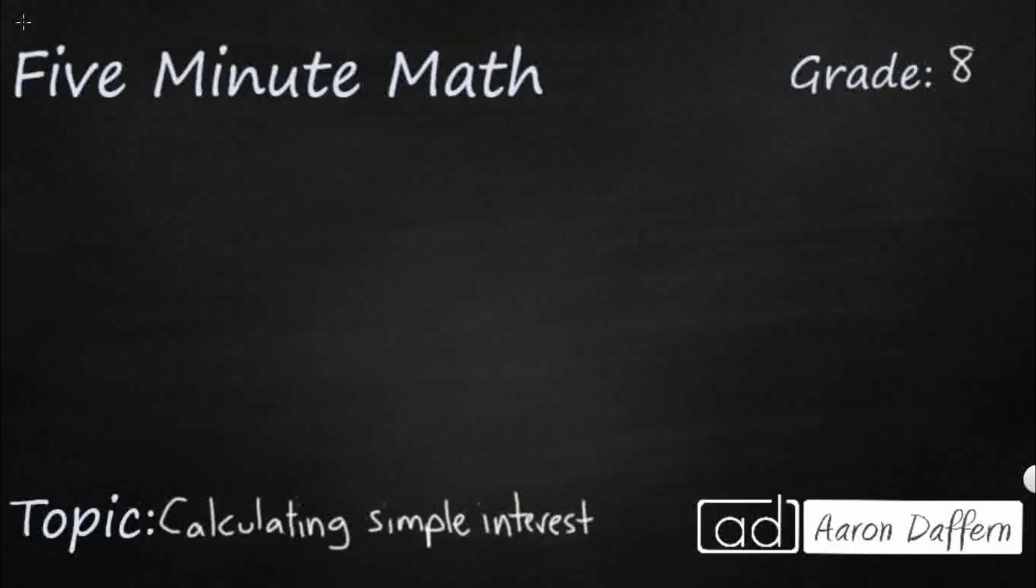So our formula for simple interest is I equals PRT. We're just going to multiply those three things. The I is our interest, that's usually what we're looking for. It needs to say specifically it's simple, not compound. The P equals the principal, that's how much money you start with.